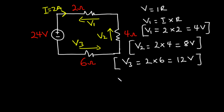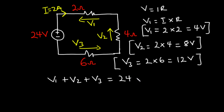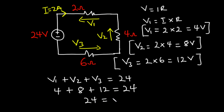Now we are going to verify if the algebraic sum of voltages dropped across each of the resistors is equal to the algebraic sum of the source voltage, which is 24 volts. According to KVL, V1 plus V2 plus V3 should equal 24 volts. V1 is 4 volts, V2 is 8 volts, and V3 is 12 volts. Now 4 plus 8 is 12, and 12 plus 12 is 24, so we have 24 equals 24. This confirms that in the closed loop, the algebraic sum of voltage sources equals the algebraic sum of voltage drops.